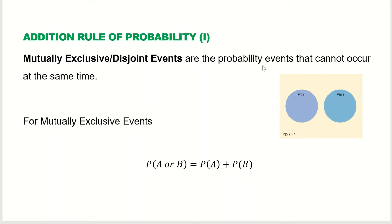Mutually exclusive events are probability events that cannot occur at the same time. So if you are looking at two events A and B, they do not occur at the same time. For the mutually exclusive event, the addition rule of probability will be: probability of A or B — whenever we see the OR, we are using the addition rule — probability of A or B is equal to probability of A plus probability of B, when A and B are disjoint.